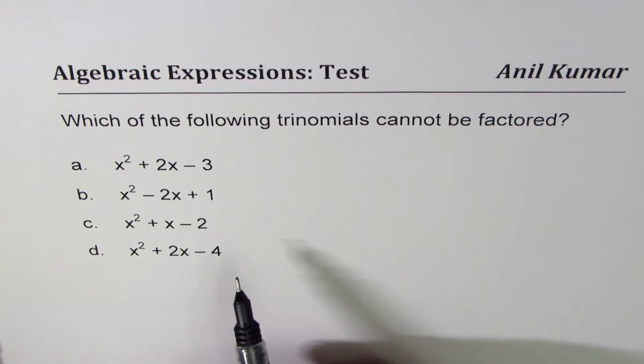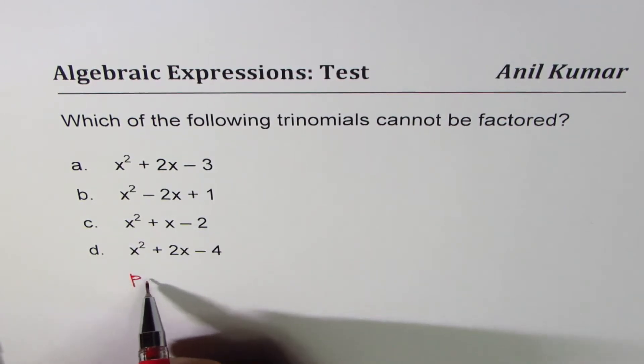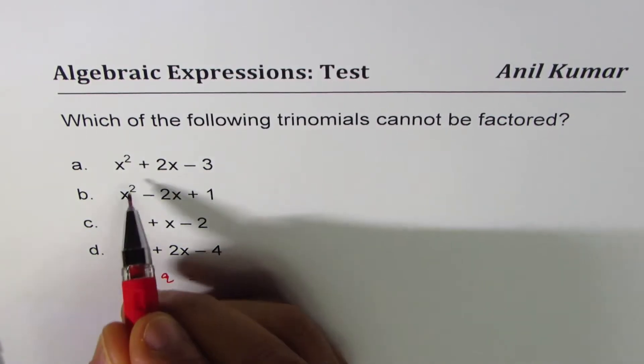So the technique which I am going to apply is that we are going to look for two numbers, let's say P and Q, whose product should be same as the product of AC.